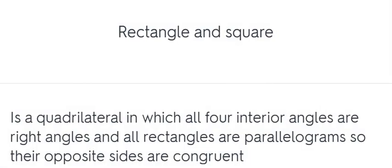Rectangle and square. A quadrilateral in which all four interior angles are right angles. All rectangles are parallelograms, so their opposite sides are congruent.